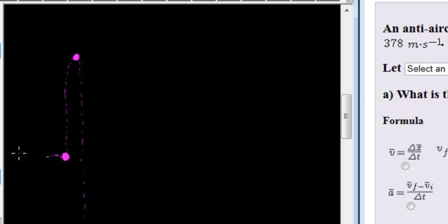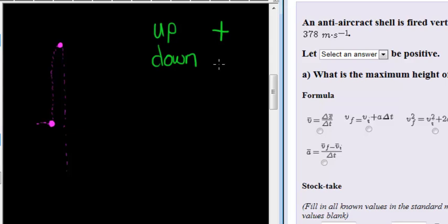So what is the initial velocity? Well, before we go ahead, remember we must choose upwards or downwards as positive and negative. I'm going to choose upwards as positive, but it really doesn't matter what you choose as positive. So here in the first part of the question, let upwards be positive.